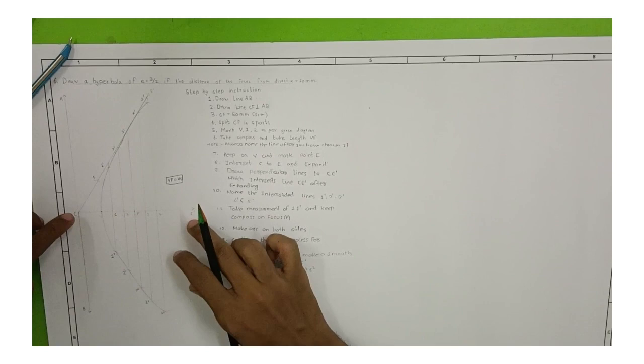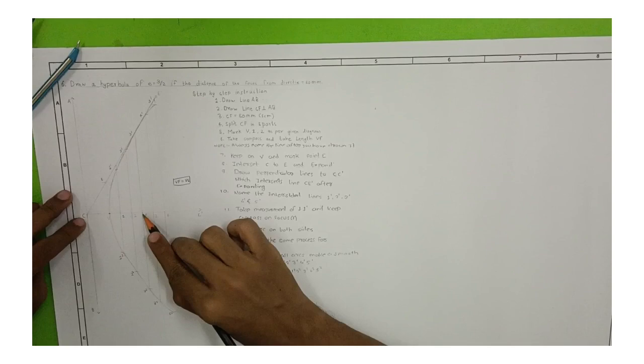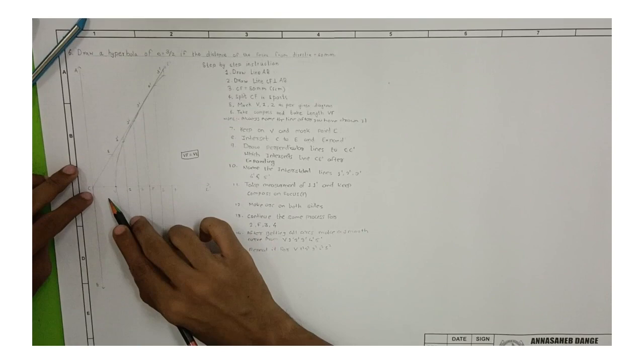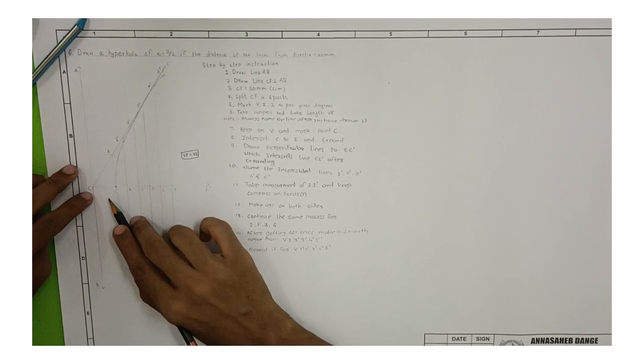First, we are to draw a line AB and a perpendicular line to AB as CC'. After drawing the line CC', mark a point 50 millimeter on that line and name it F.